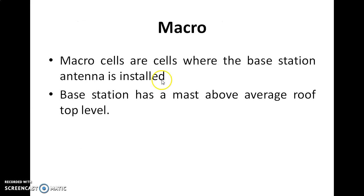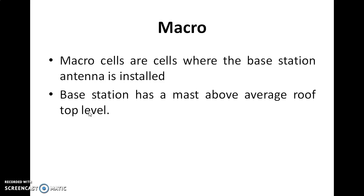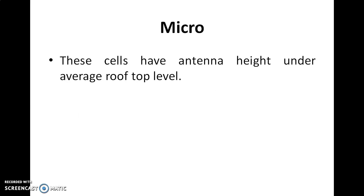Macro cells are where the base station's antennas are installed. The base station has a mast above average rooftop level — it will have a mast post or something like that above the average rooftop level. Those are called macro cells.